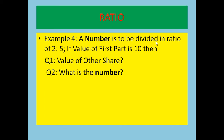Next question: a number is to be divided in the ratio of 2 is to 5. If the value of the first part is 10, find the total number. The value of ratio 2 is 10, so the value of ratio 1 will be 10 divided by 2, which equals 5. Finding the value of ratio 1 is our main purpose.